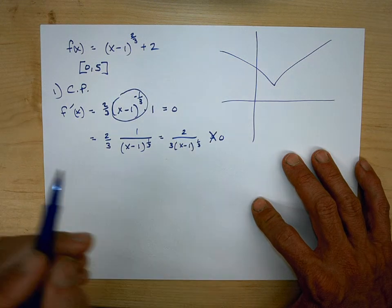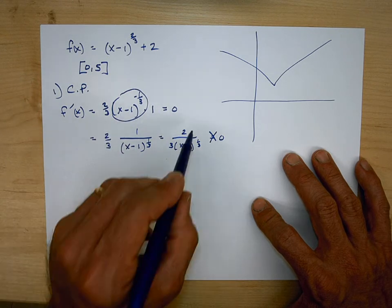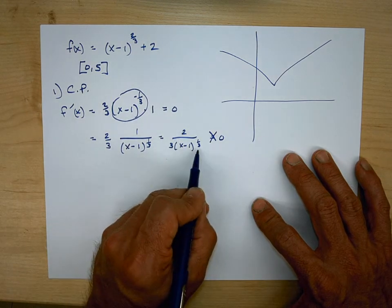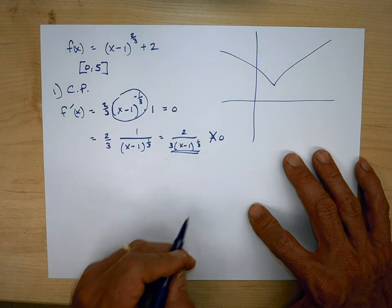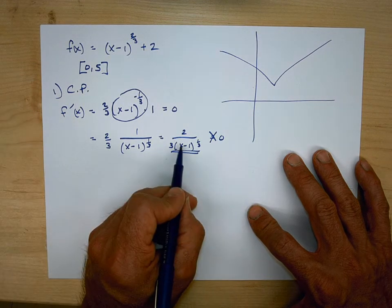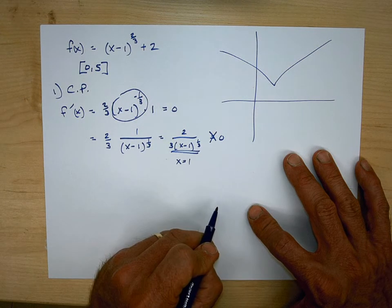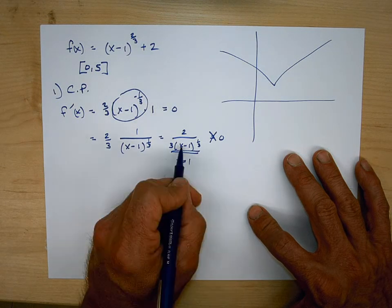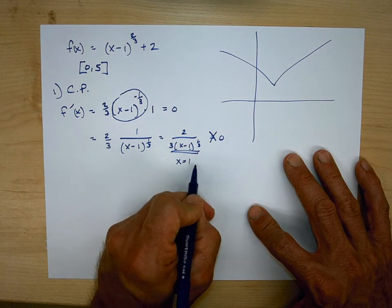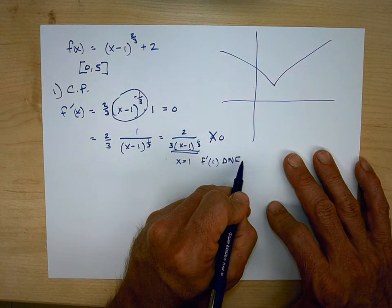However — and this is why I encourage you to think about this first — ask yourself: is there a place where this function is undefined? Because this is a rational function with (x minus 1) to the 1/3 in the denominator, the question is: can we put something in for x that would make the denominator zero? You can see from the x minus 1 here that if x equals 1, then we have the cube root of 0, which is 0, making the derivative undefined. So f prime of 1 does not exist — there's our critical point. And our endpoints are x equals 0 and x equals 5.